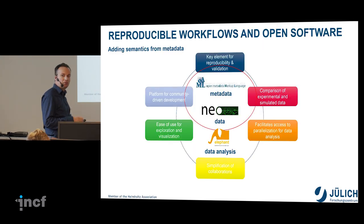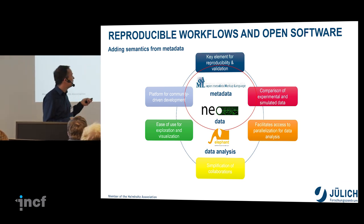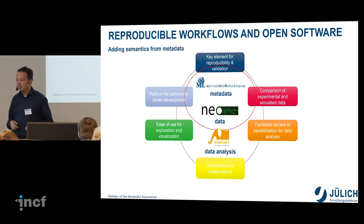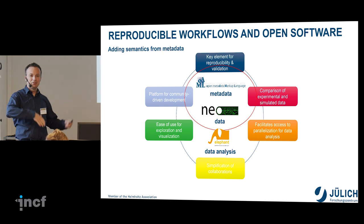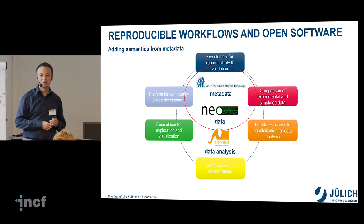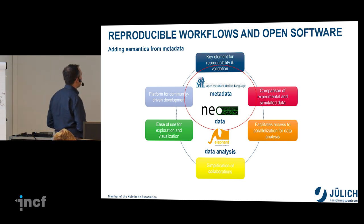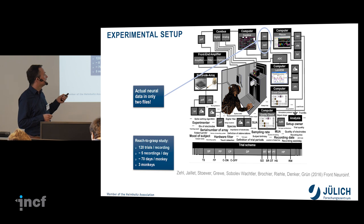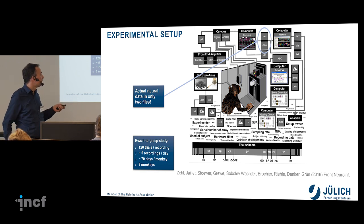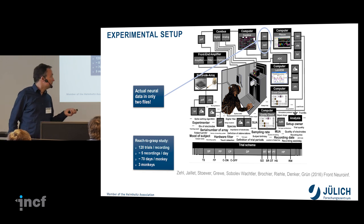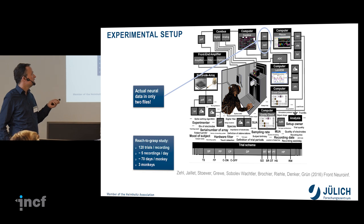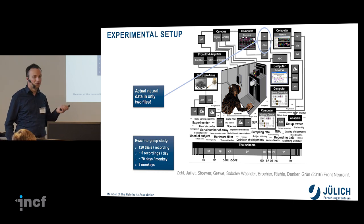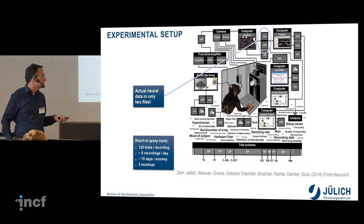Now that we heard from Thomas about metadata and a bit more about the data format — we have lots of information maybe in an odML file and a way to load our raw data — how do we merge this? How do we add these semantics? To remind you of this picture: it's a sketch from an experiment showing the individual machinery needed to keep this monkey happy, and the different types of files producing data here and there. Only two files have the actual data; the rest is all metadata which needs to be recorded.